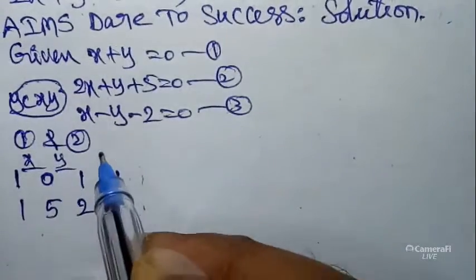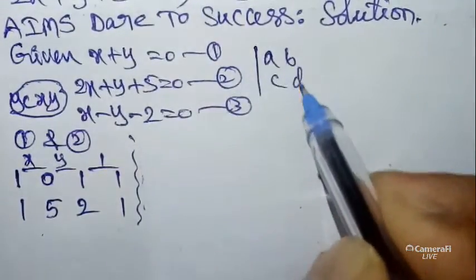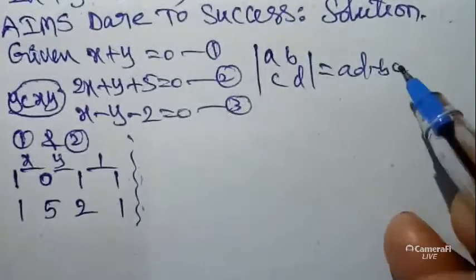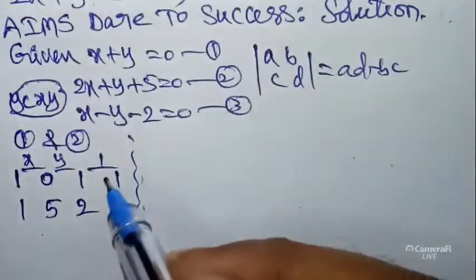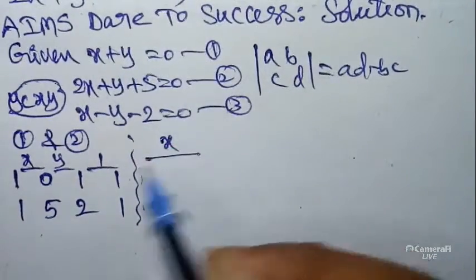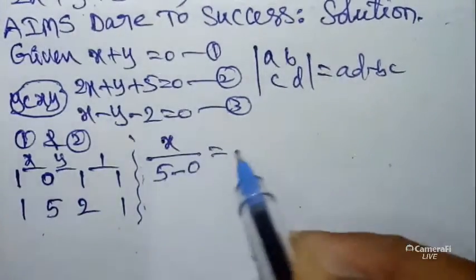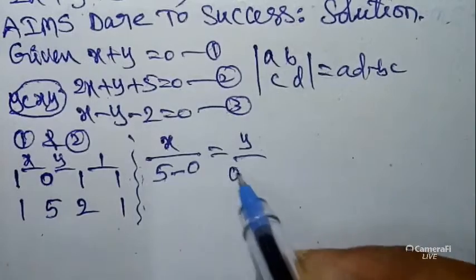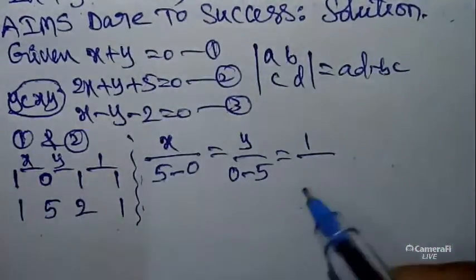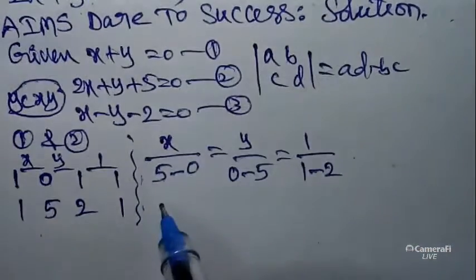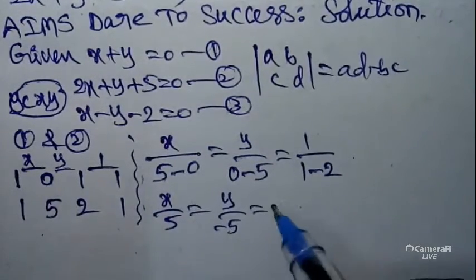You can write in the x-y-e format. Remember the logic: determinant of [a b; c d] = ad - bc, from the matrices determinant concept. So: x divided by (1×5 - 0×1) = x/5; equals y divided by (0×2 - 1×5) = y/(-5); equals 1 divided by (1×1 - 2×1) = 1/(-1). So x/5 = y/(-5) = 1/(-1).